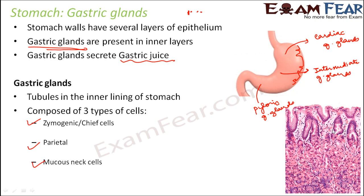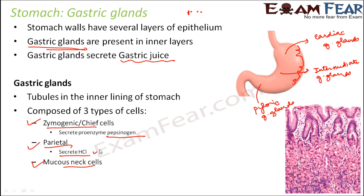The gastric glands have these three types of cells: zymogenic or chief cells, parietal cells, and mucous neck cells. Chief cells secrete a proenzyme called pepsinogen — a proenzyme is an enzyme in its inactive form that still needs to be activated to perform its job. Parietal cells secrete hydrochloric acid, making the medium highly acidic. Mucous neck cells secrete mucus, which helps in lubrication.